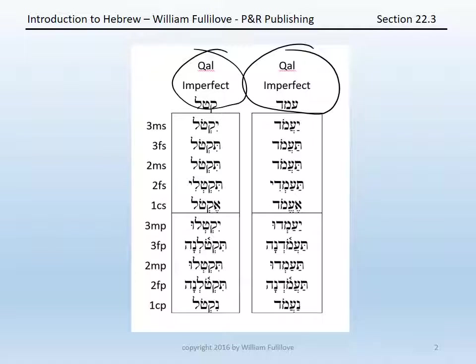Note a couple of features. First, the voweling of the first common singular is an e-class vowel, both for the prefix letter, the aleph, and the compound schwa under the first root letter. Second, you'll note that for three forms — the second feminine singular, the third masculine plural, and the second masculine plural — you have a full vowel under the guttural, in this case the ayin.